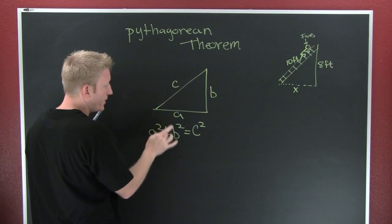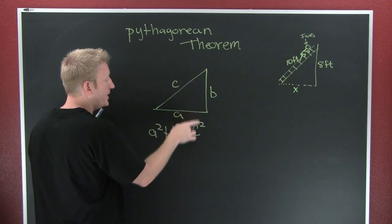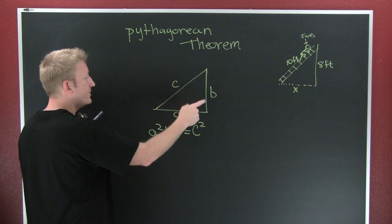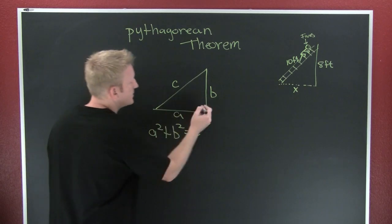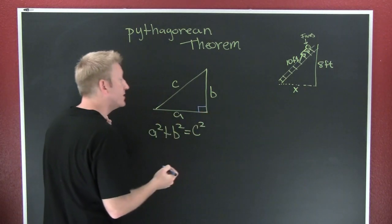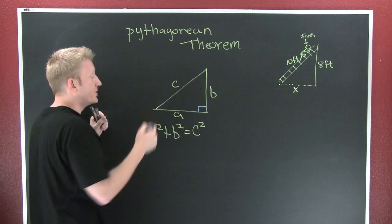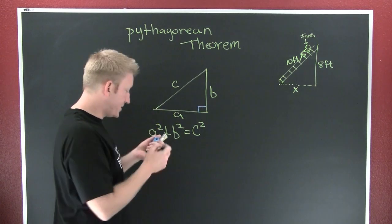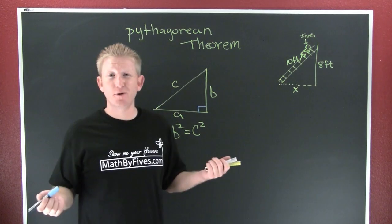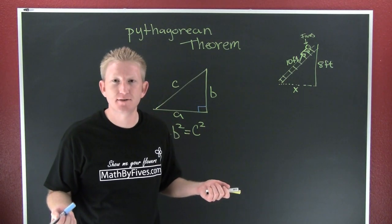That says a squared plus b squared is c squared — or the sum of the squares of the legs of a right triangle is equal to the square of the hypotenuse. Also misquoted in the Wizard of Oz, of all places.